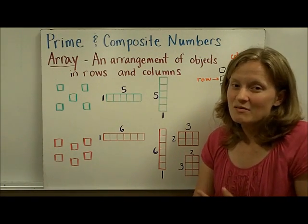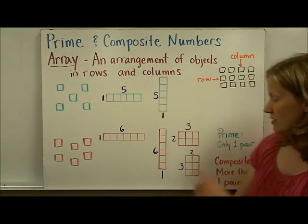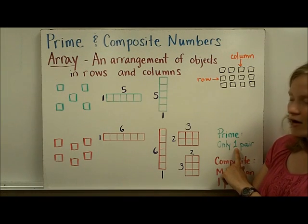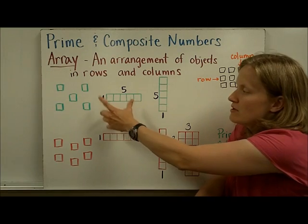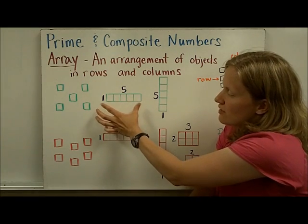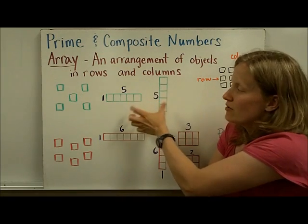And this is the difference between prime and composite numbers. Prime numbers have just one pair of arrangements, one basic way to arrange it, the number. You can arrange five in one by five or five by one. Really, it's one pair, one array.